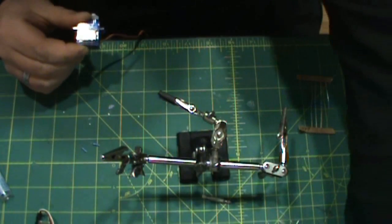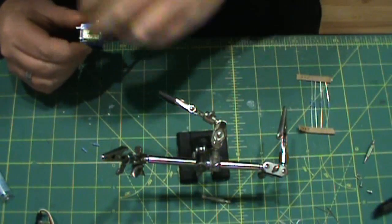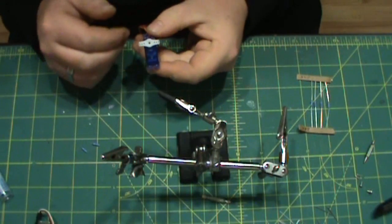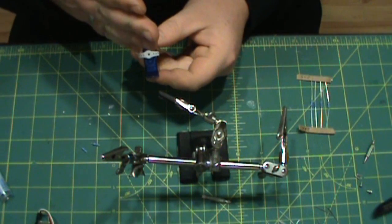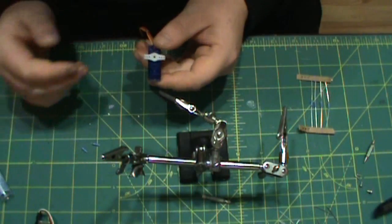As you've seen in my earlier video, stock servo throw on it is about 90 degrees total. So you're getting about 45 and 45 to equal the 90.